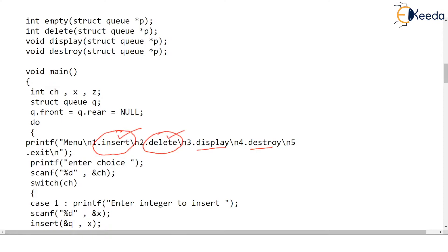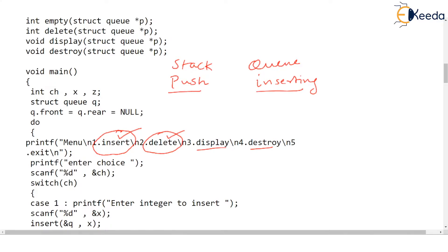Remember, in a stack we don't say that we insert a value — we say we push a value in the stack. But in the queue we say we are inserting a value. Both operations add new data, but when you add data in a stack it is called push, and when you remove data it is called pop. Whereas in the queue we say it is a delete operation.